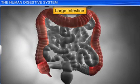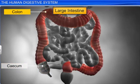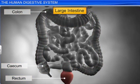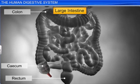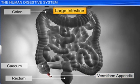The large intestine, the second last part of the alimentary canal, is divided into three regions: the cecum, colon, and rectum. The cecum, a small blind sac which hosts some symbiotic microorganisms, is not as developed in humans as in ruminants. Moreover, in humans, the cecum gives rise to a narrow finger-like tubular projection called the vermiform appendix, which is a vestigial or functionless organ.